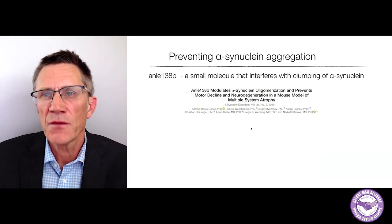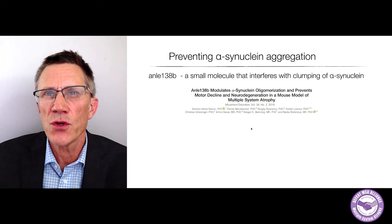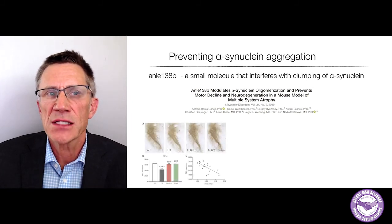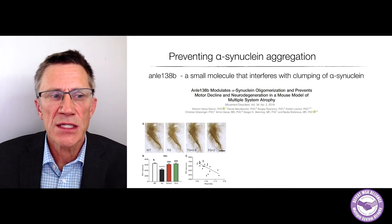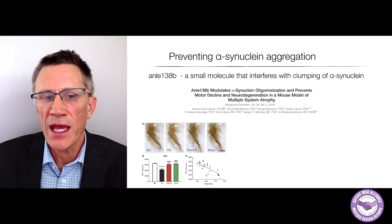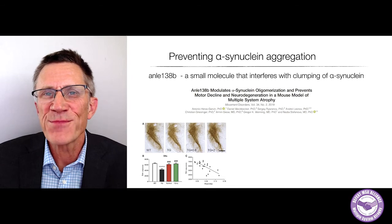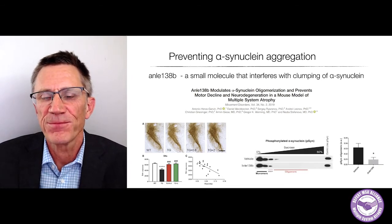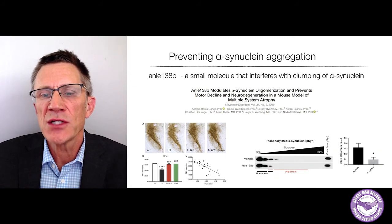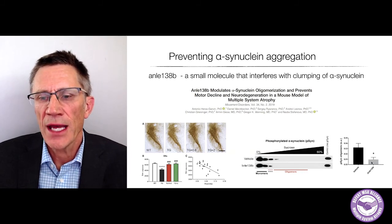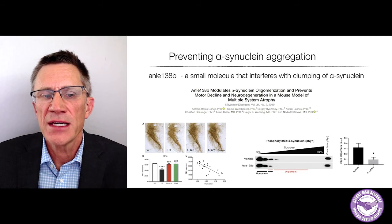Improved behavior is correlated with fewer cells dying — there's less motor dysfunction, or better motor function, when you rescue cells. This is also associated with a reduction of phosphorylated alpha-synuclein, which is the aggregated form. So ANLI-138B removes aggregates and improves cell survival.